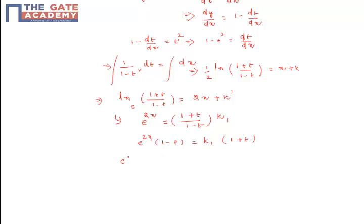Now we substitute back: t is x minus y, so e power 2x into 1 minus x plus y, which is equal to k1 into 1 plus x minus y.